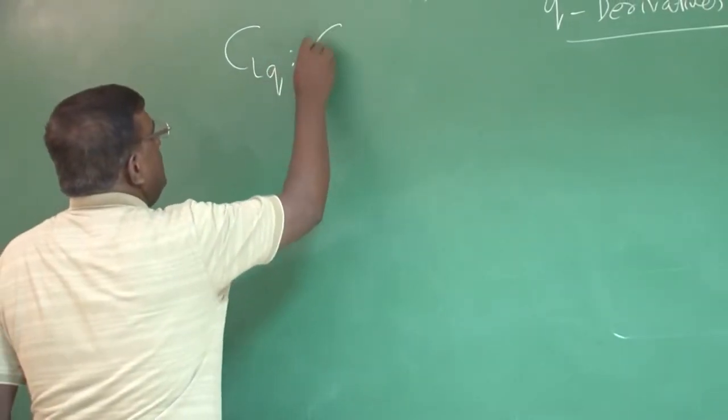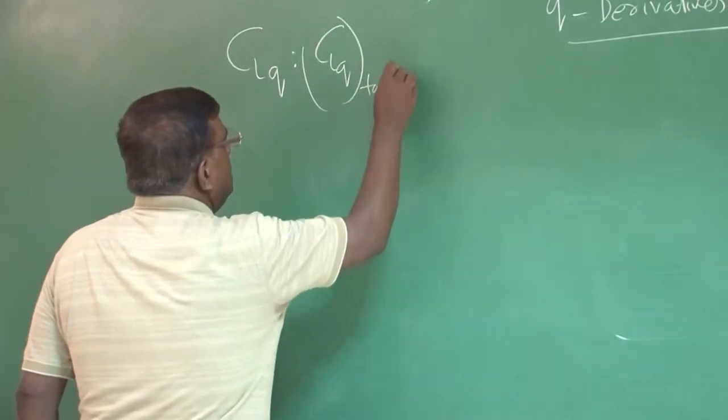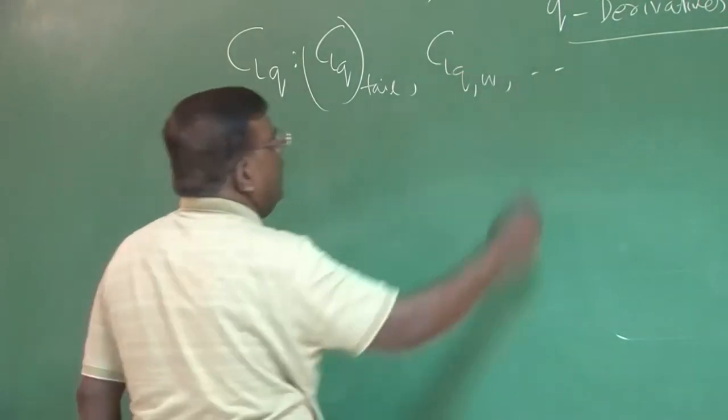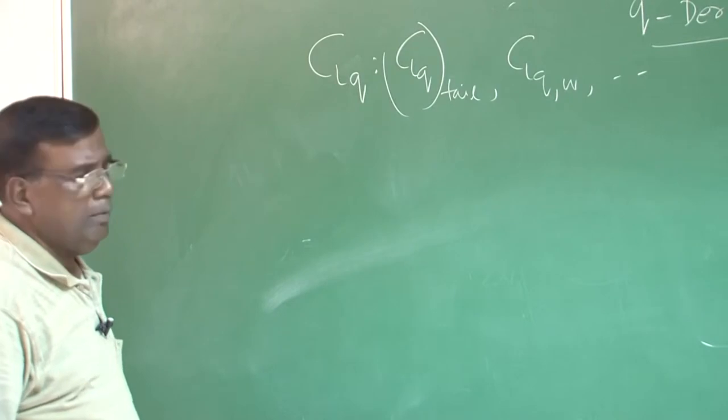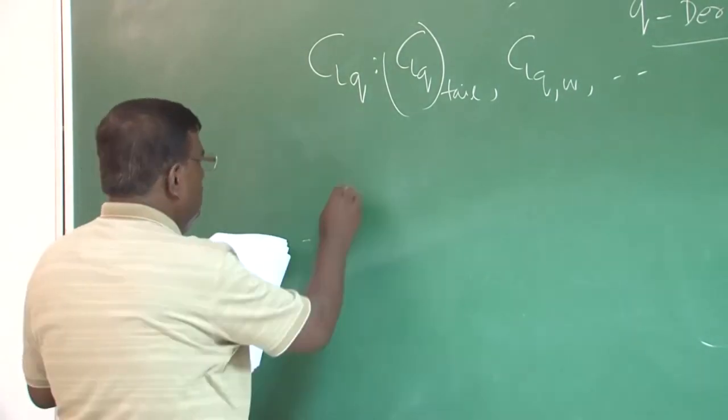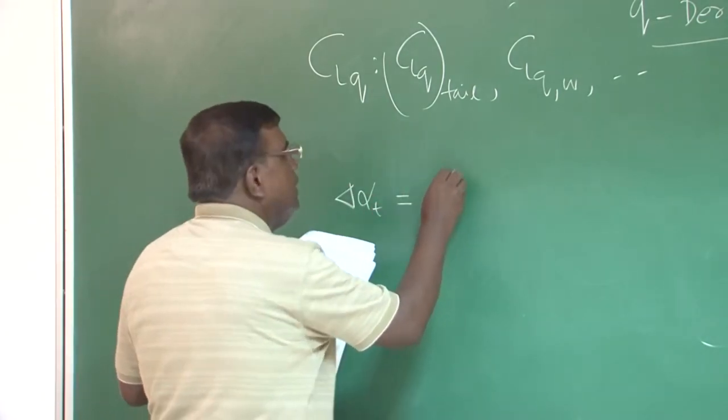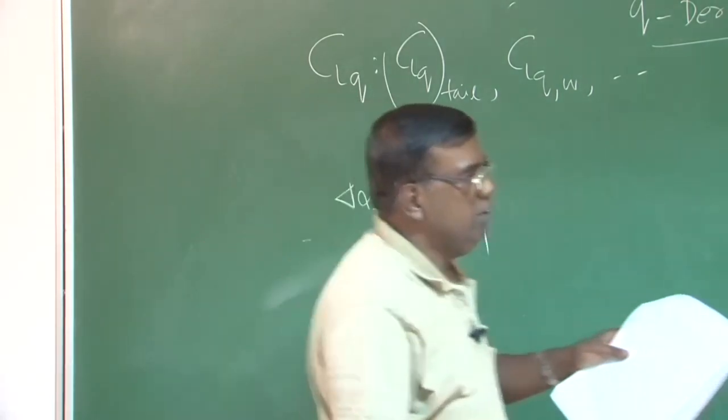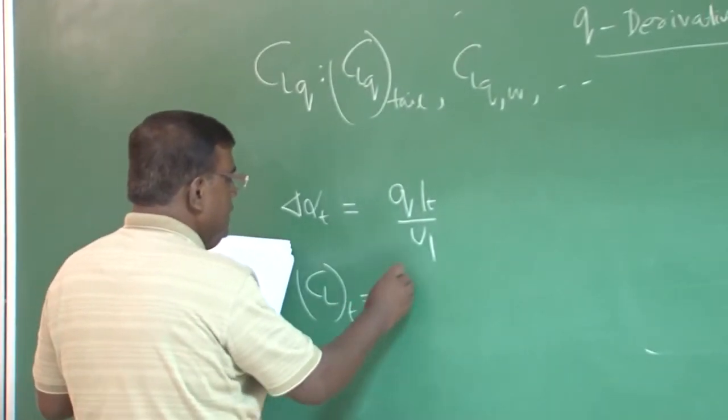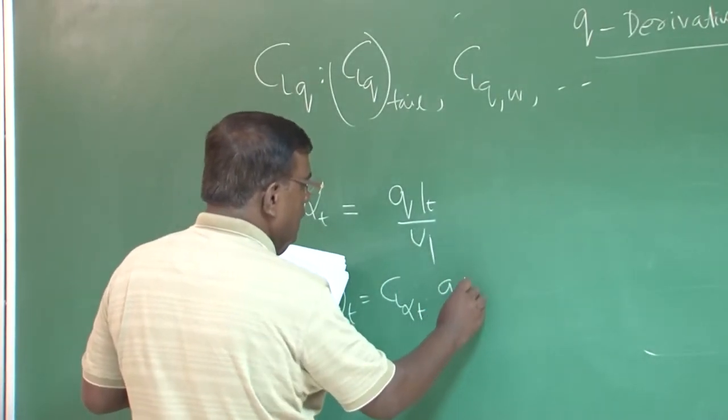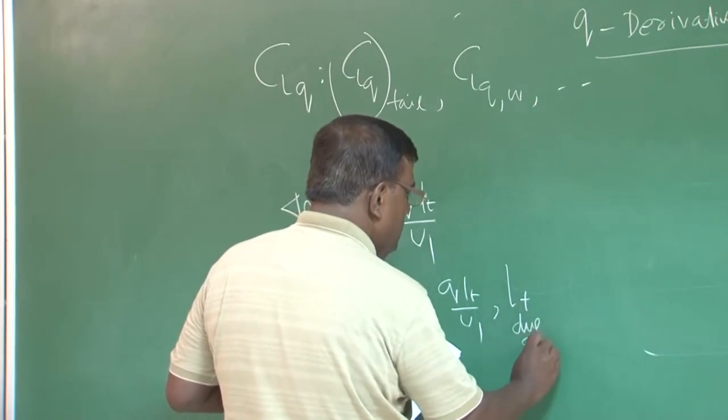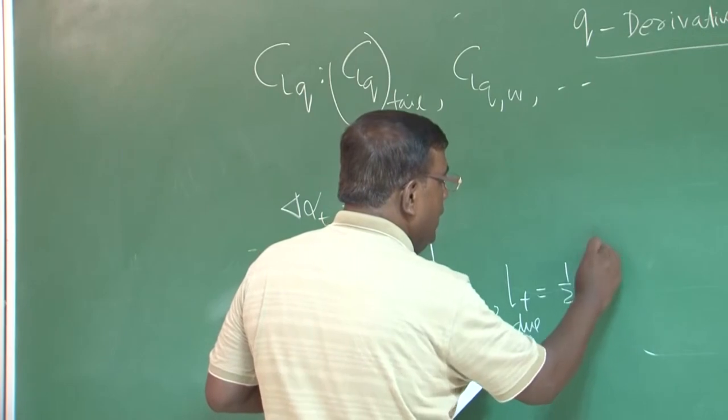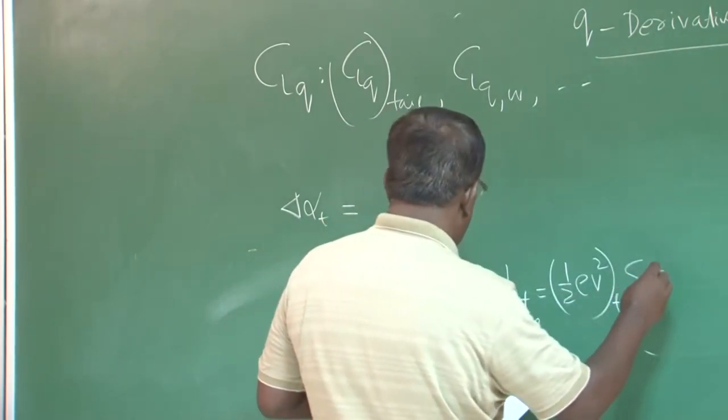Please understand, CLq could be because of CLq tail, then because of CLq wing and also fuselage and other components. But, we are mostly convinced that CLq tail will be predominant. So, we will try to derive expression for CLq tail. So, we know that delta alpha tail because of q is qLt by u1, which we have demonstrated here. So, what is the CL at the tail? It will be CL alpha tail into qLt by u1. So, what is lift at the tail? Because of q,